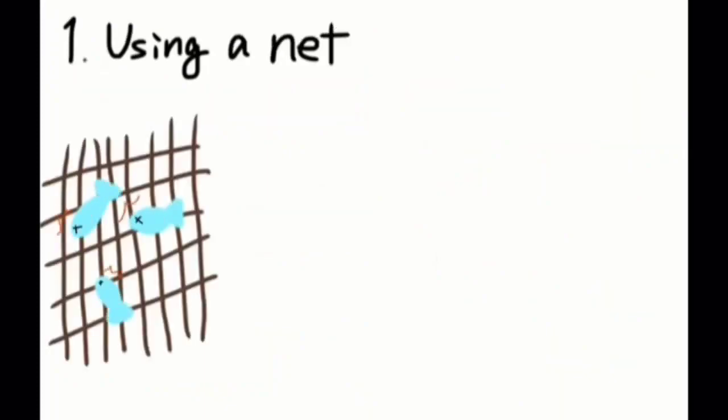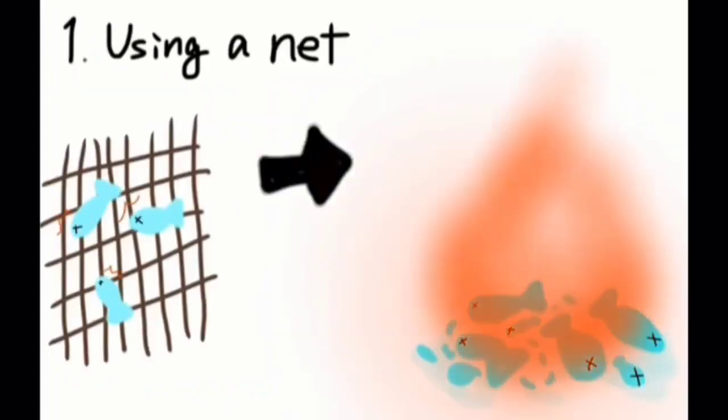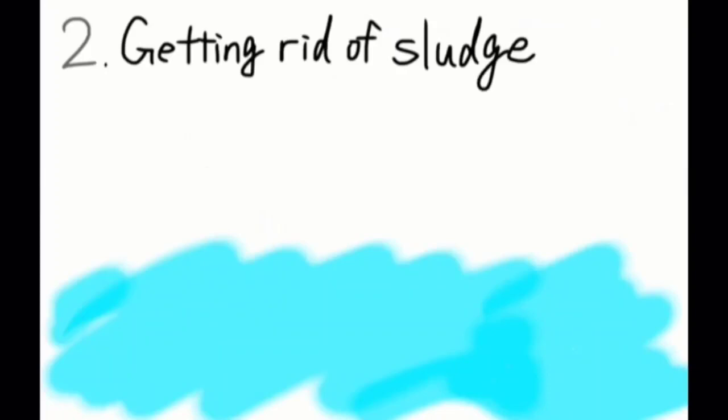There are two ways. First one is using a net. By catching fish with it, most polluted fish were disposed. Second is getting rid of poisonous sludge in the bottom of the sea.